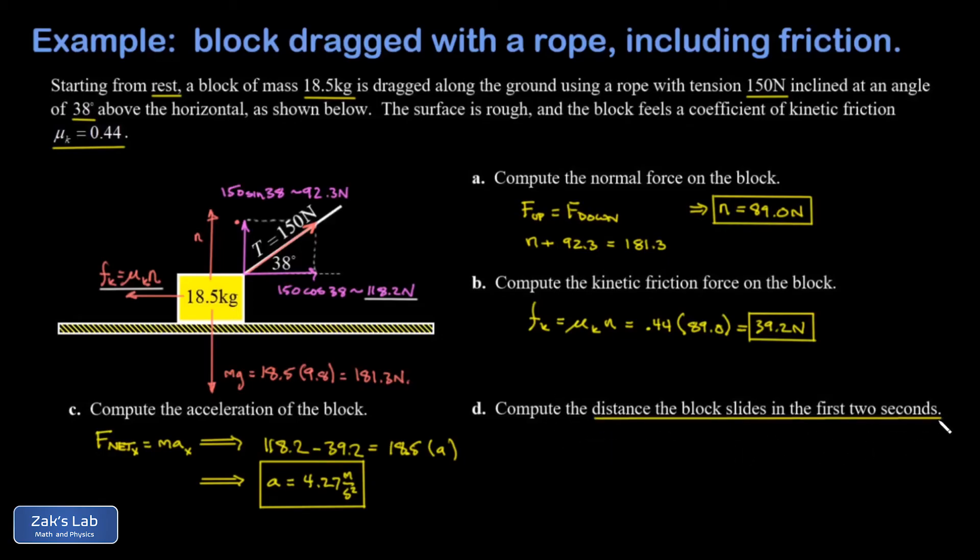Again it started from rest, so we just plug into our first kinematics equation. This is the kinematics equation describing the position of an object as a function of time. We'll go ahead and put the origin right there at the initial position, so my initial x value is zero. It started from rest, so my initial velocity is zero.